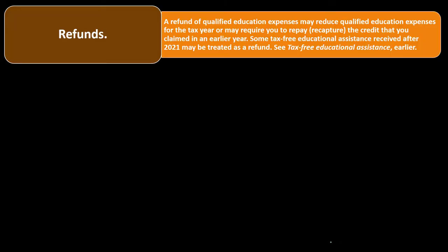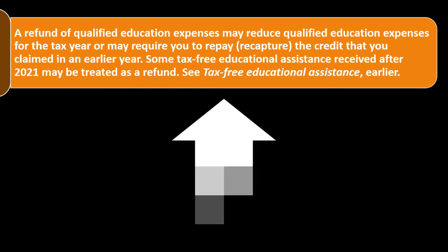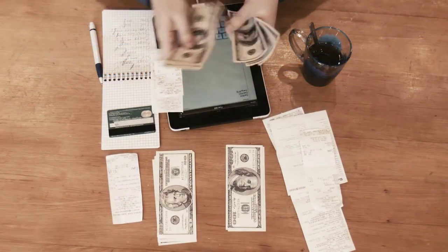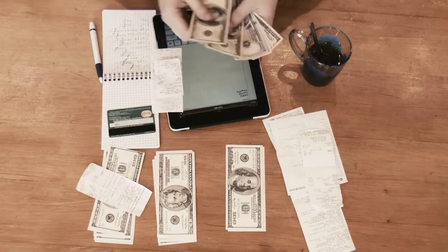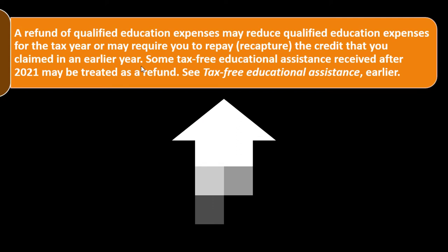A refund of qualified education expenses may reduce your qualified education expenses for the tax year or may require you to repay or recapture the credit claimed in an earlier year. This is similar to state tax refunds: if you got a benefit in the current year and then received a refund in the next year, you benefited from the credit but didn't actually spend that money. The preference is to fix it in the current year when you receive the refund rather than amending the prior return.